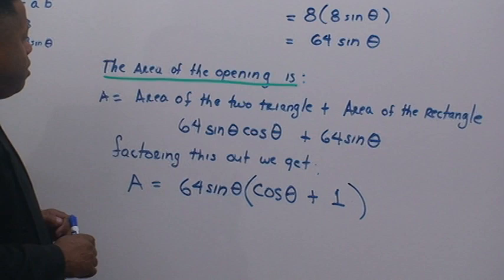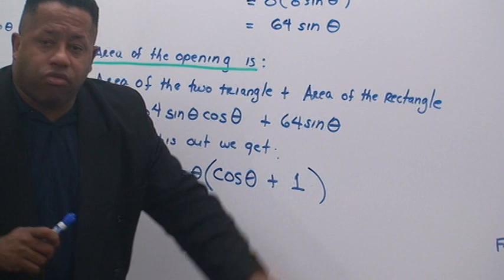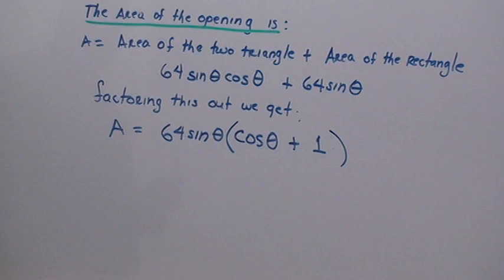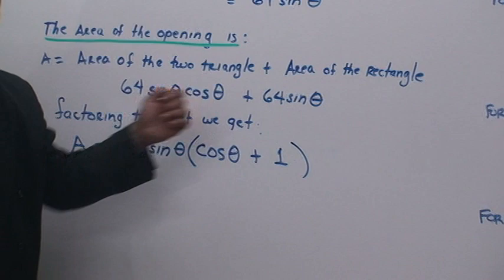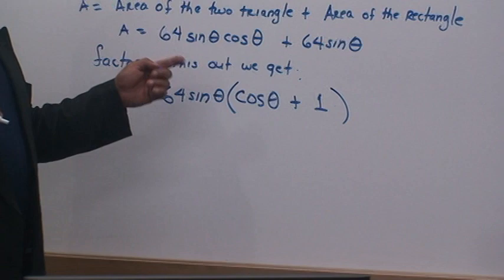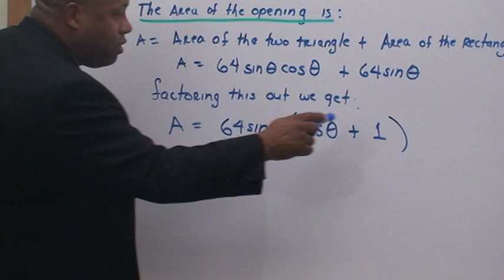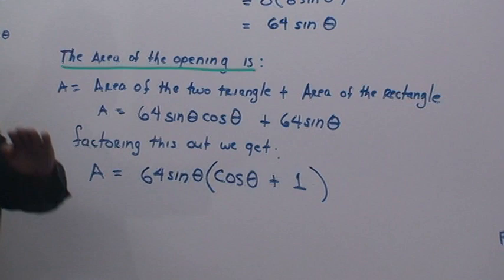So, plugging this in 8 times, really the length times the width, or 8 times B, you come up with 64 sine theta. Now, the area of the complete opening of this small project here, the area of this is, area of the two triangles plus the area of the rectangle. We do this by taking 64 sine theta, cosine theta, plus 64 sine theta. This is the area of both of the triangles, and this is the area of the rectangle. So, we're going to do some factoring out. We're going to factor out 64 sine theta is your GCF, and of course, you assess what's in the middle there, so this will be cosine theta plus 1. So, 64 sine theta times cosine theta plus 1 for your area of the whole opening.